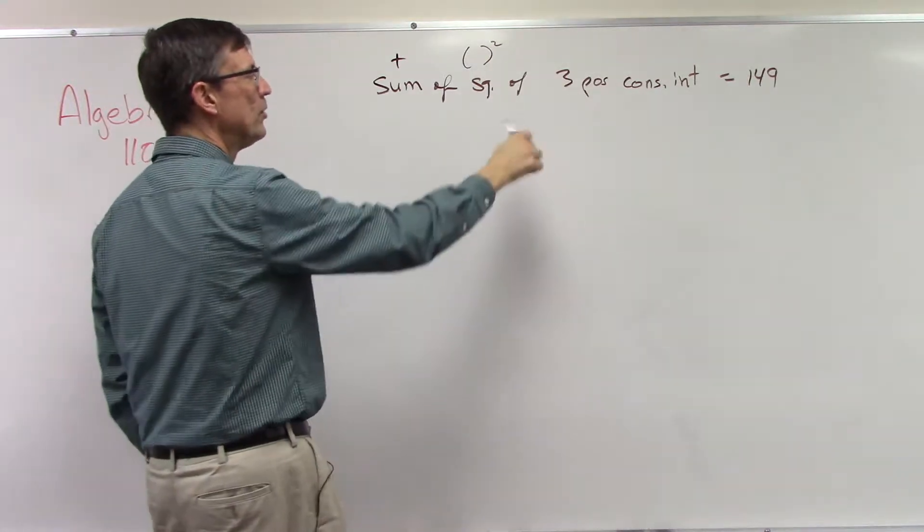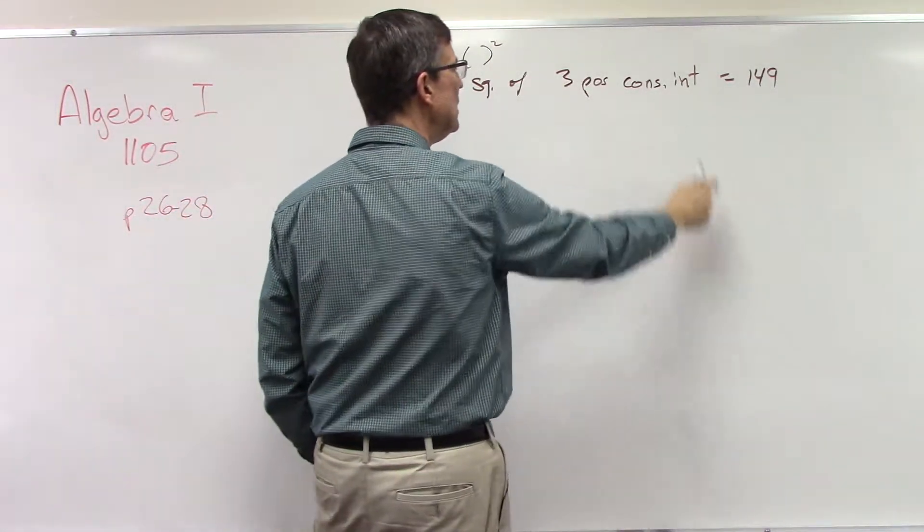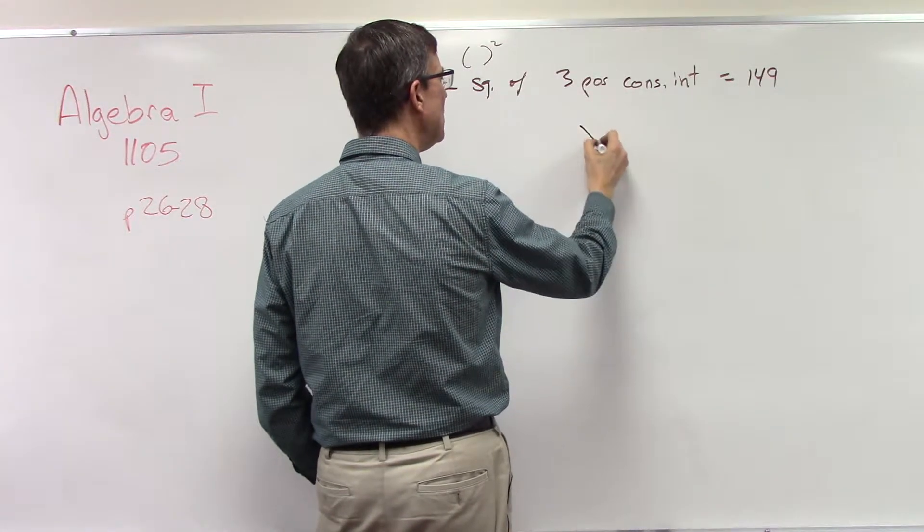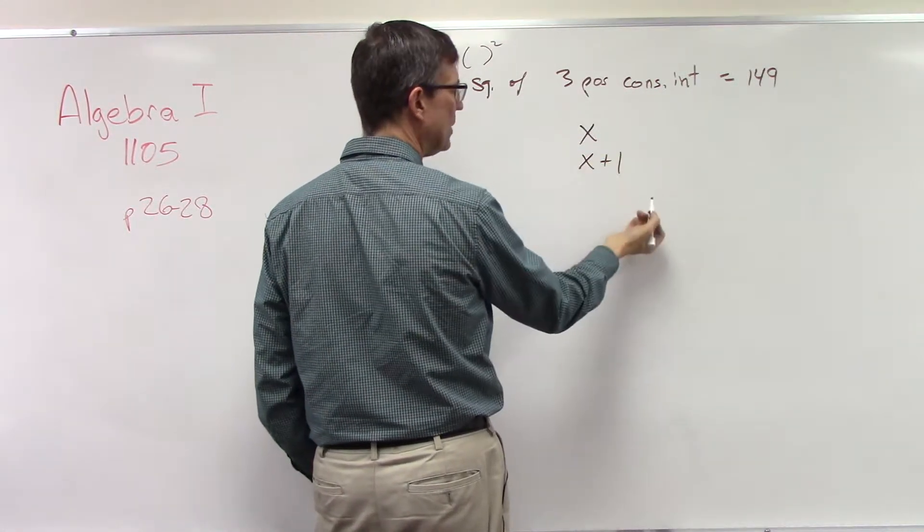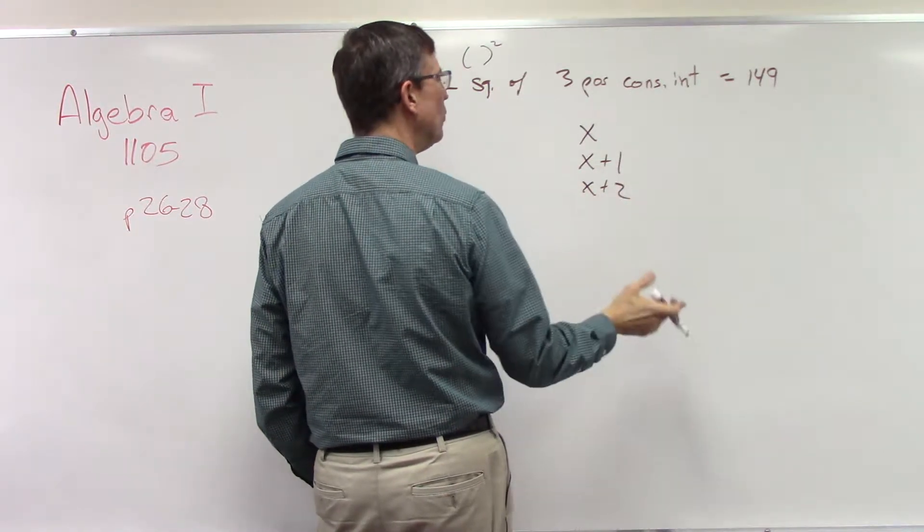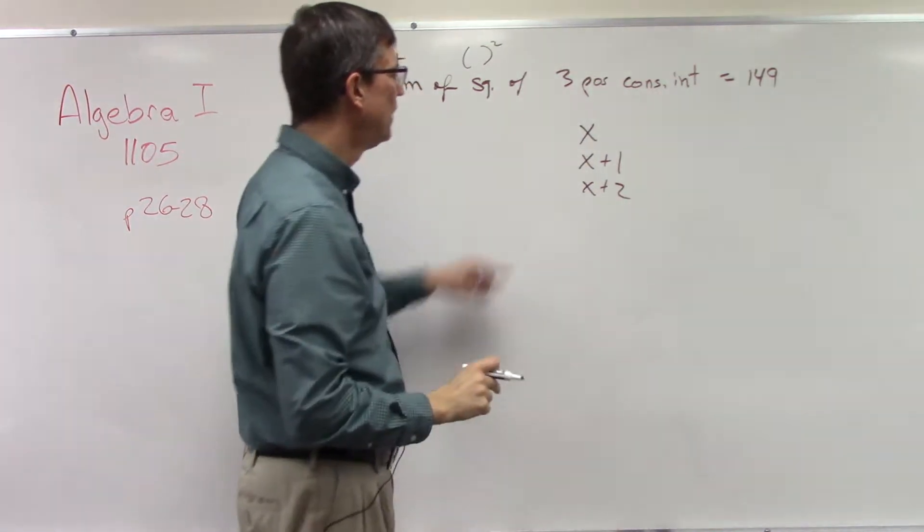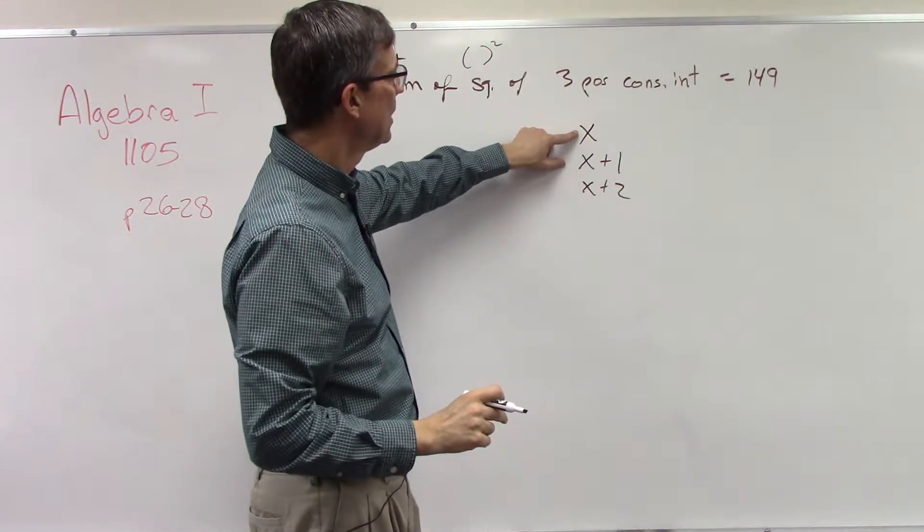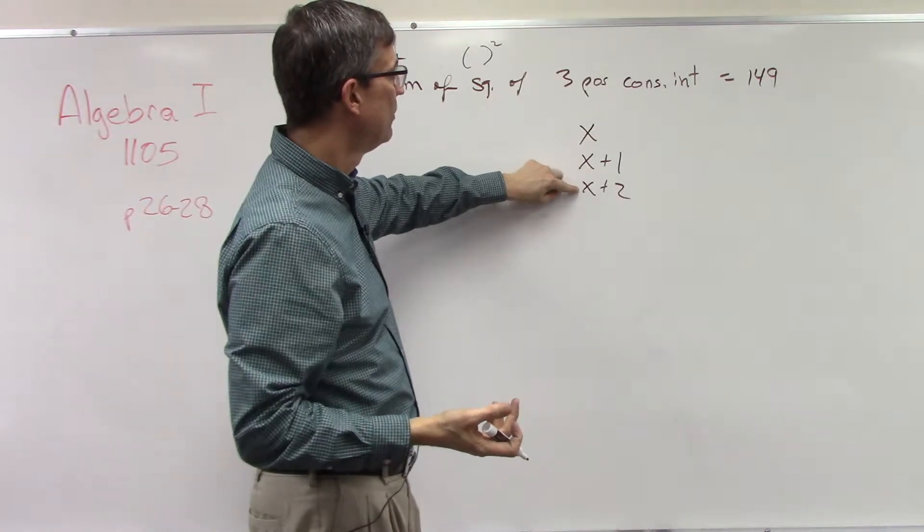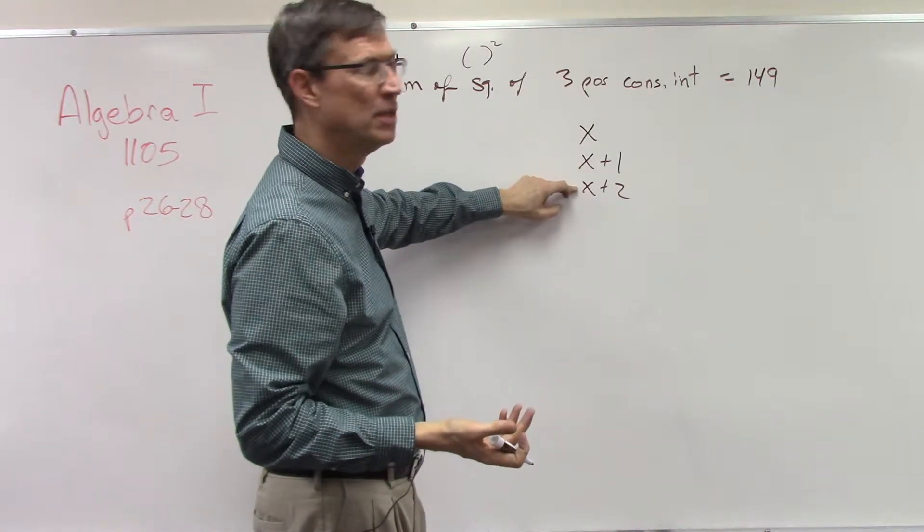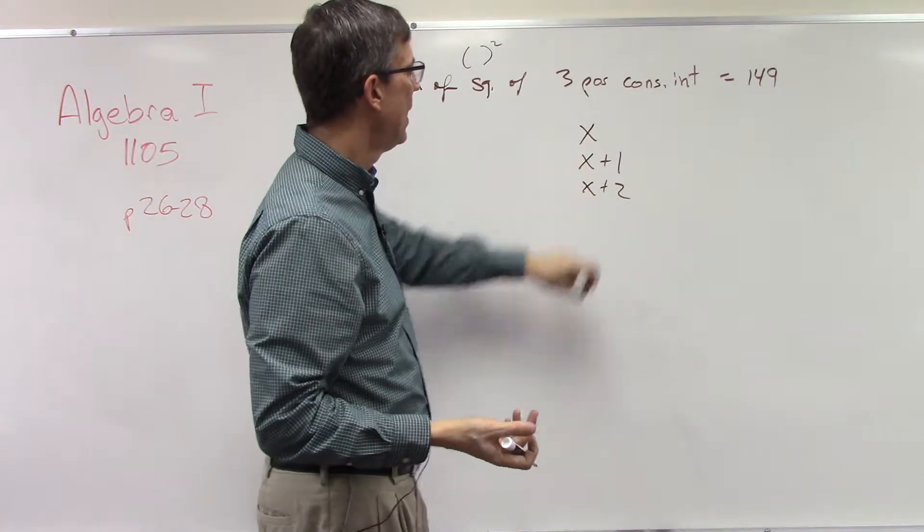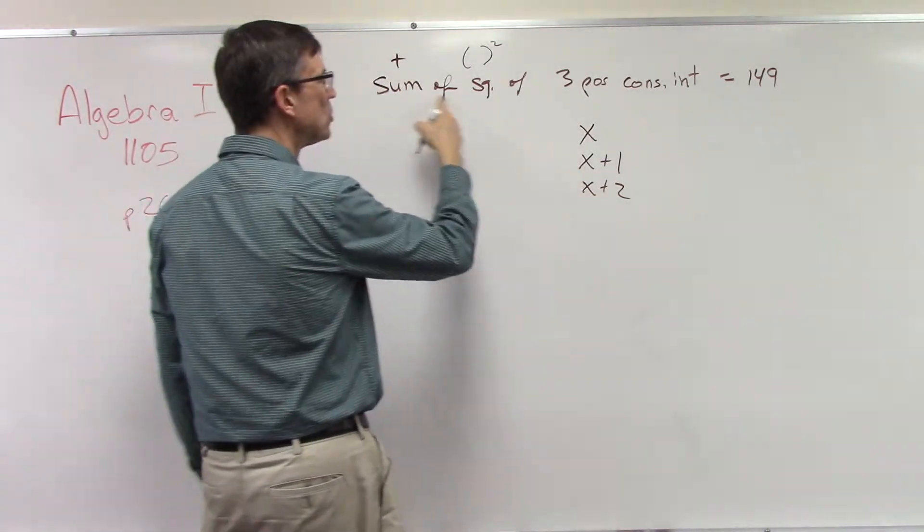I need three numbers in consecutive order, so the first one will be x, the next one is one more than that, x+1, the next consecutive integer is x+2. So if we pretend like the first digit is 5, then the next digit would be 5+1 or 6, the next one would be 7, which is 5+2. Does that make sense? Consecutive integers—we're adding 1, adding 2, and then we're squaring all of these.